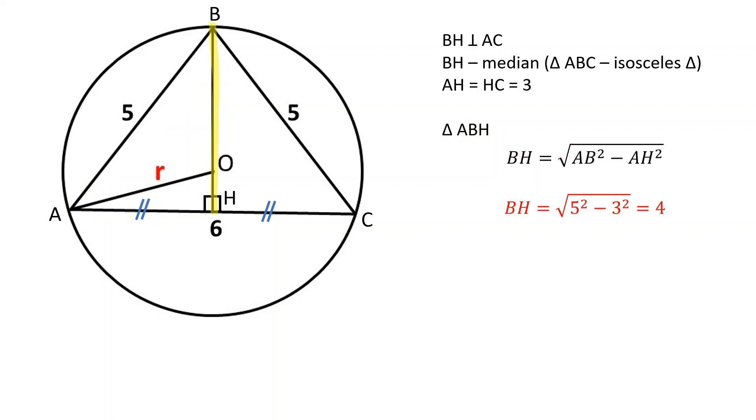BH equals square root of 25 minus 9, which is 4. Let's review triangle AOH.